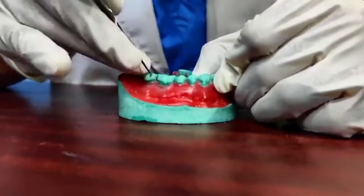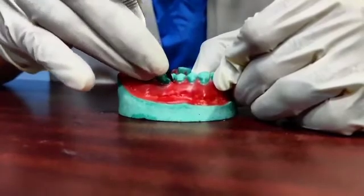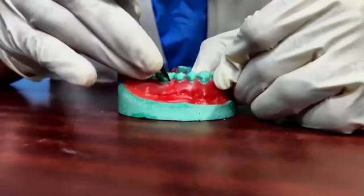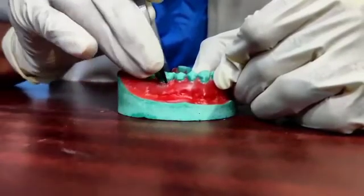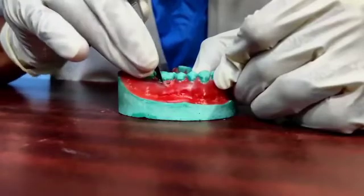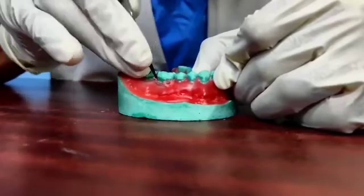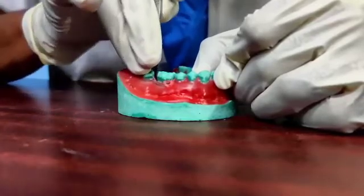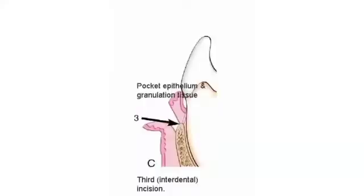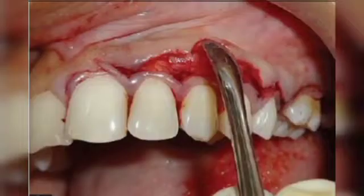The second incision is the crevicular or sulcular incision, and any BP blade can be used, like number 12 or 15, and the incision should be given facing the alveolar bone. The third and last incision is the interdental incision, which connects the internal bevel and the crevicular incision.